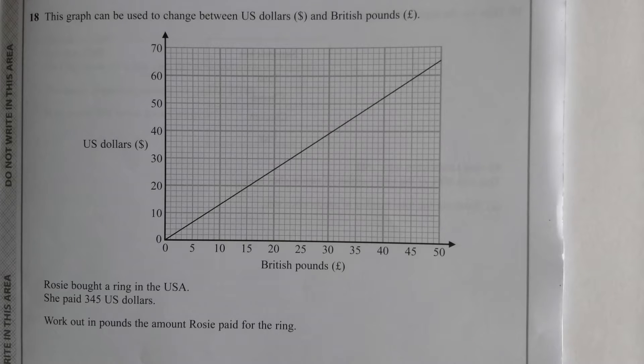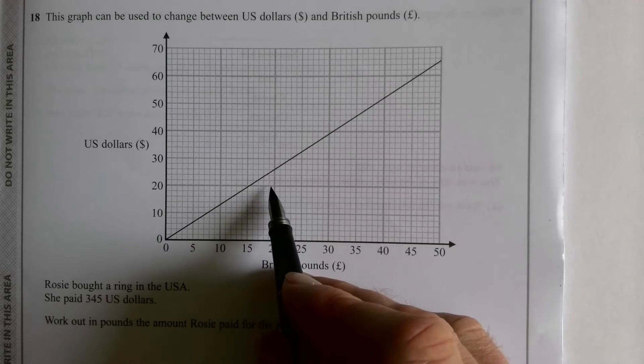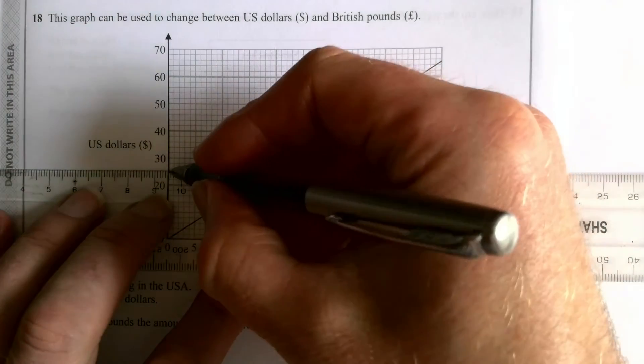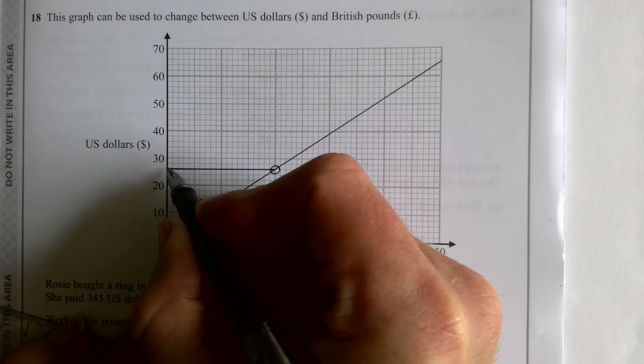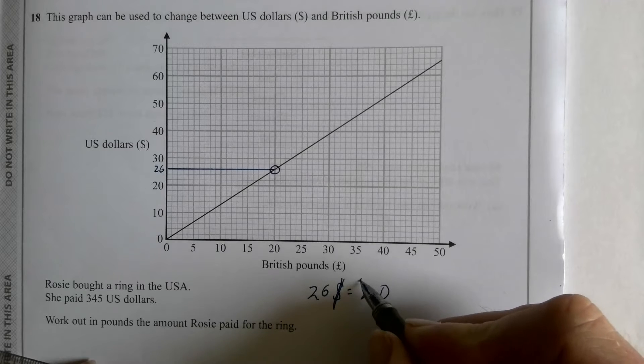Here's question 18. It's not actually that tricky. She bought a ring in the USA. She paid 345 US dollars. Work out in pounds the amount Rosie paid for the ring. So I want to know what 345 US dollars is in pounds. I kind of want to know how many pounds one dollar is, but it's not easy to go at 1 on here. So instead, I'm going to go for a bit where I can see the line going exactly through a corner. I see that here. So I'm going to go across. And that is, there's 5 divisions making up 10, so it must be 2 for each one. 22, 24, 26 dollars equals 20 pounds.